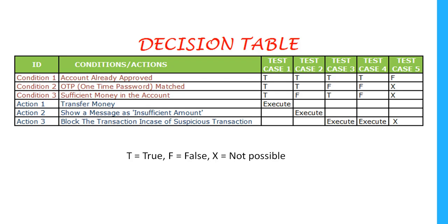Now let's see how we prepare the decision table. The decision table contains multiple conditions and corresponding actions. I've listed conditions 1, 2, and 3: account already approved, OTP matched, and sufficient money in the account. The actions are: transfer money, show insufficient amount message, and block the transaction for suspicious activity. In test case 1, all three conditions are true, so we execute action 1 — transfer money.